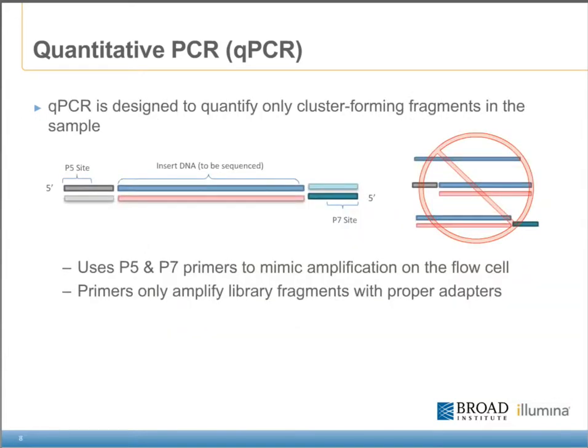Our qPCR assay is designed to quantify only the amplifiable library fragments. We've done this by using p5 and p7 primers in our qPCR master mix to mimic cluster amplification on the flow cell. The only fragments that get amplified are double-stranded with both the p5 and p7 adapters attached. These are the only fragments that will amplify on the flow cell, and they're the only ones that will amplify in qPCR.